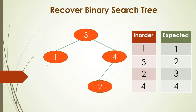So we take the binary search tree, do an inorder traversal, and get a list of numbers. We sort those numbers to get the expected sorted list. We then compare the two lists, and whenever there is a mismatch, we know that particular node is not in the proper position. We update the value for that node so we get a proper binary search tree.